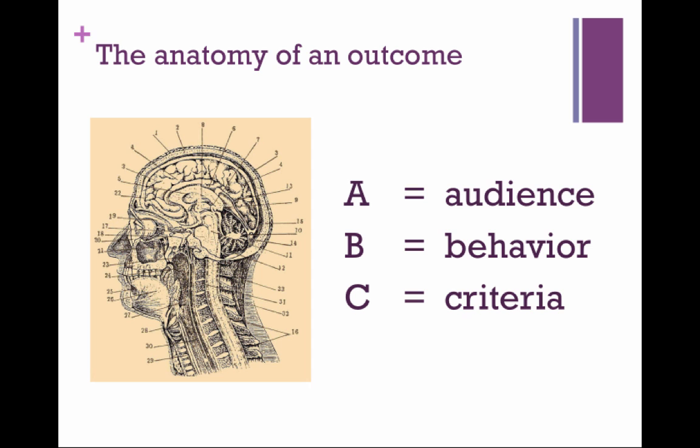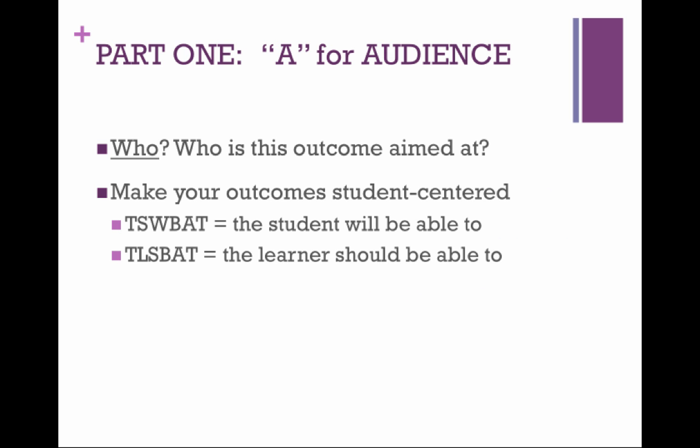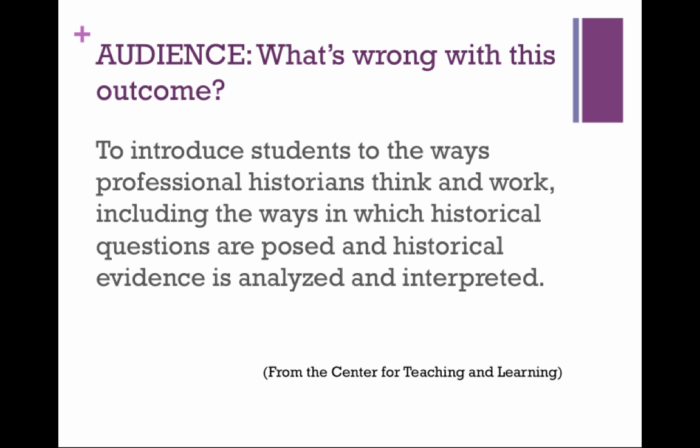Outcomes really have three parts: the audience, the behavior, and the criteria. When writing your outcome, think of the audience — who is this outcome aimed at? They really should be student-centered as opposed to instructor-centered. Let's look at this outcome. What's wrong with it? Well, this is instructor-centered — it's about what the instructor is going to do as opposed to what the students will be doing.